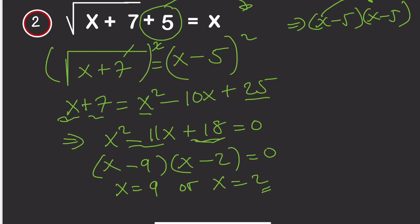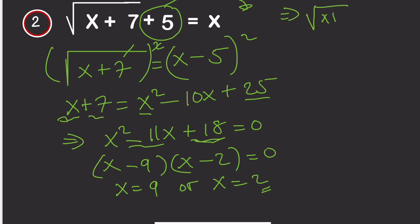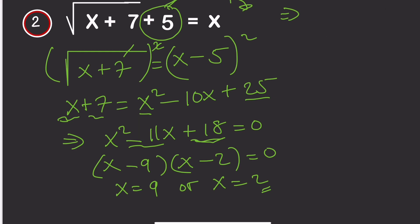Now we need to check which answer is correct. The original equation is the square root of x plus 7 equals x minus 5. If we substitute x equals 2: 2 plus 7 gives 9, and 2 minus 5 gives minus 3. The square root of 9 is 3, but the right side is minus 3, so x equals 2 is wrong.